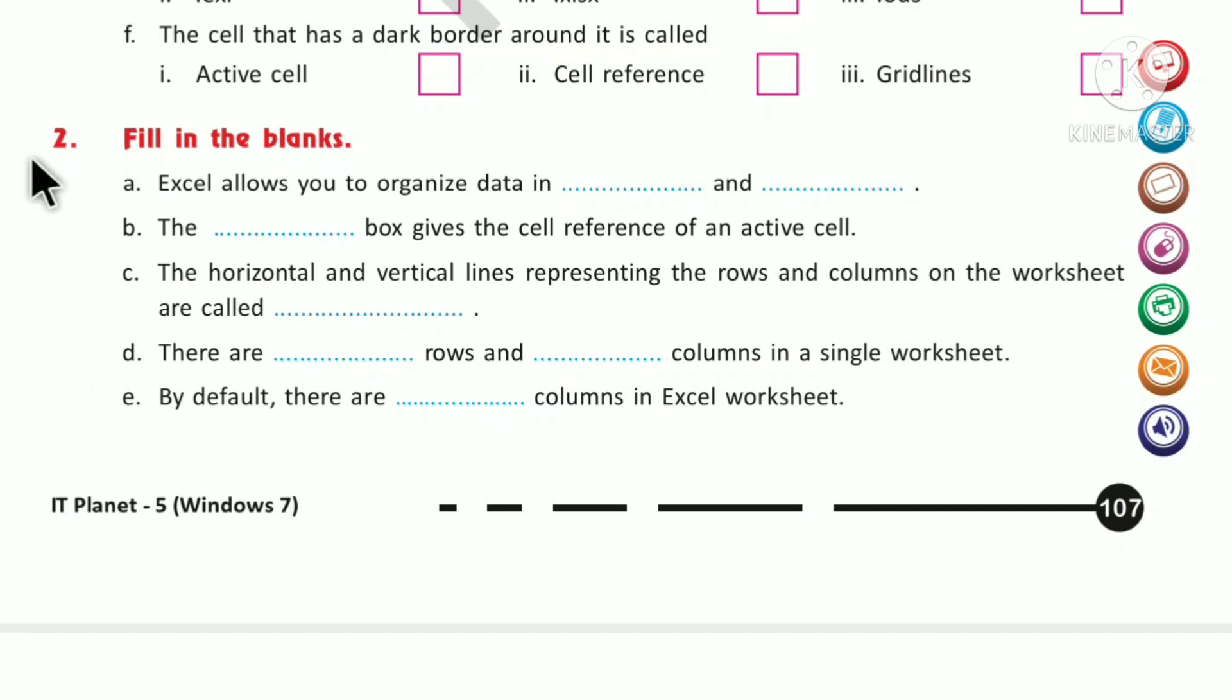Exercise 2: Fill in the blanks. Question A: Excel allows you to organize data in _____ and _____ - in rows and columns. Question B: The _____ box gives the cell reference of an active cell. The name box gives the cell reference of an active cell.